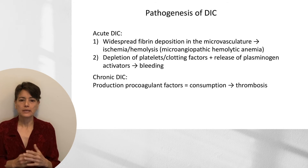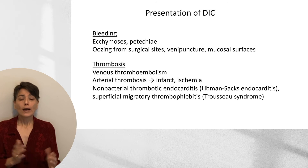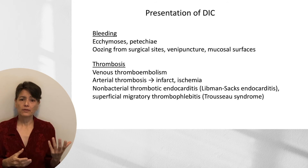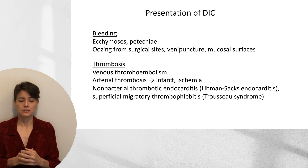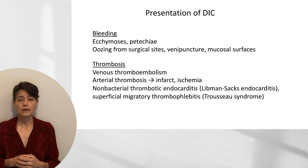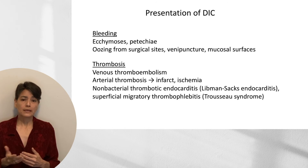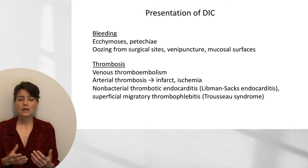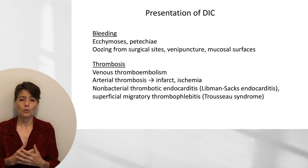You can also see bleeding in chronic DIC. How your patient presents depends on whether the predominant factor is bleeding or thrombosis. If bleeding predominates, the patient will present with ecchymosis, petechiae, and may have oozing from surgical sites, venipuncture, and mucosal surfaces. If you notice a post-op patient has oozing from the surgical site or bleeding from an IV site, you need to think about the possibility of DIC. Thrombosis typically presents as venous thromboembolism — deep venous thrombosis or pulmonary embolism — or arterial thrombosis with infarct and ischemia.